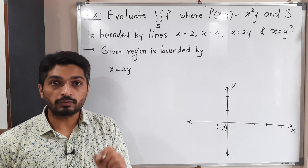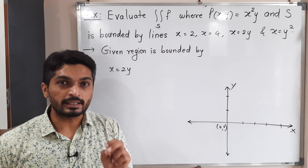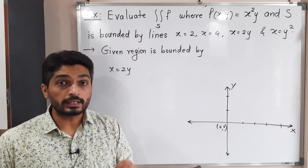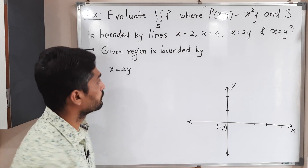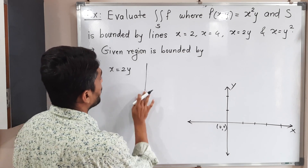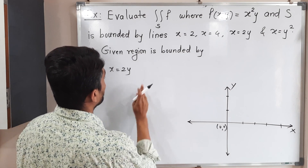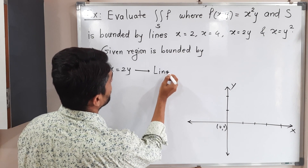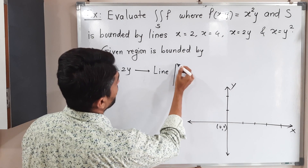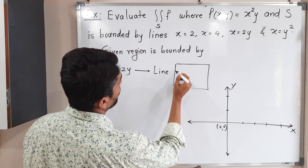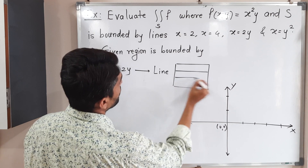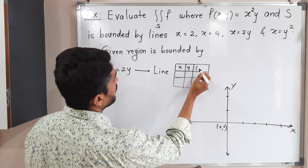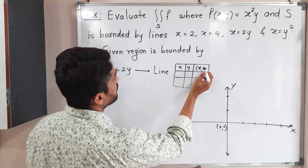So x is equal to 2y — the power of x is 1 and the power of y is also 1, so that means it represents a straight line. To find any straight line, it is enough to find any two points on the line. So I draw a table with columns for x, y, and the point (x, y).